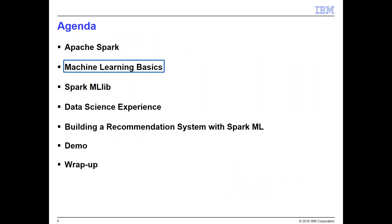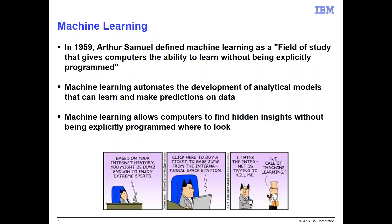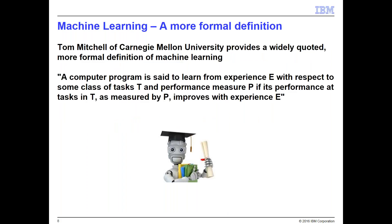Machine learning was defined by Arthur Samuel, who worked at IBM, as a field of study that gives computers the ability to learn without being explicitly programmed. In machine learning, you develop analytical models that you train, and those learned models can then make predictions on new data they haven't seen before. It allows you to find insights in your data without explicitly programming where to look — it's not like a report where you specify exactly what to look at.